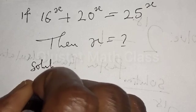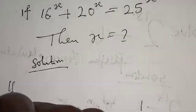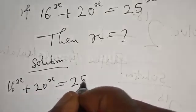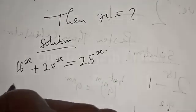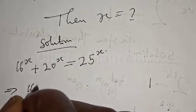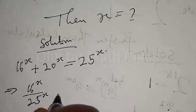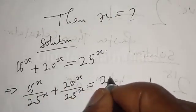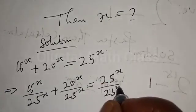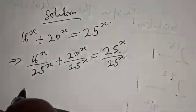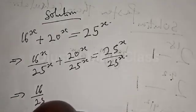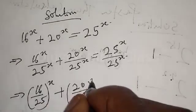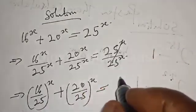Solution. We have 16 raised to power x plus 20 raised to power x equal to 25 raised to power x. Let's divide all terms by 25 raised to power x. Then we have 16 raised to power x over 25 raised to power x plus 20 raised to power x over 25 raised to power x equal to 1.